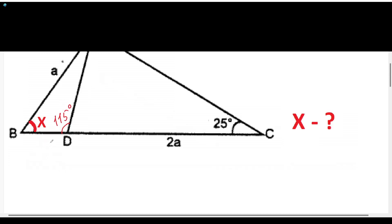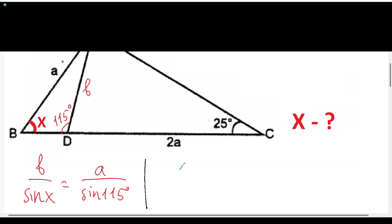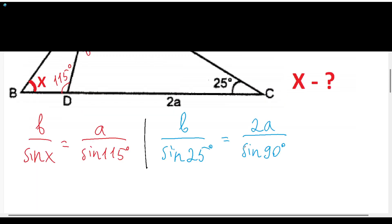Next step is to know that we can use here the law of sines. We can see here AD, let me write here AD as any letter, just B. You can write B or sin(X) equal to A over sin(115°). And the second equation will be from the triangle ADC, so B over sin(25°) will be equal to 2A over sin(90°).